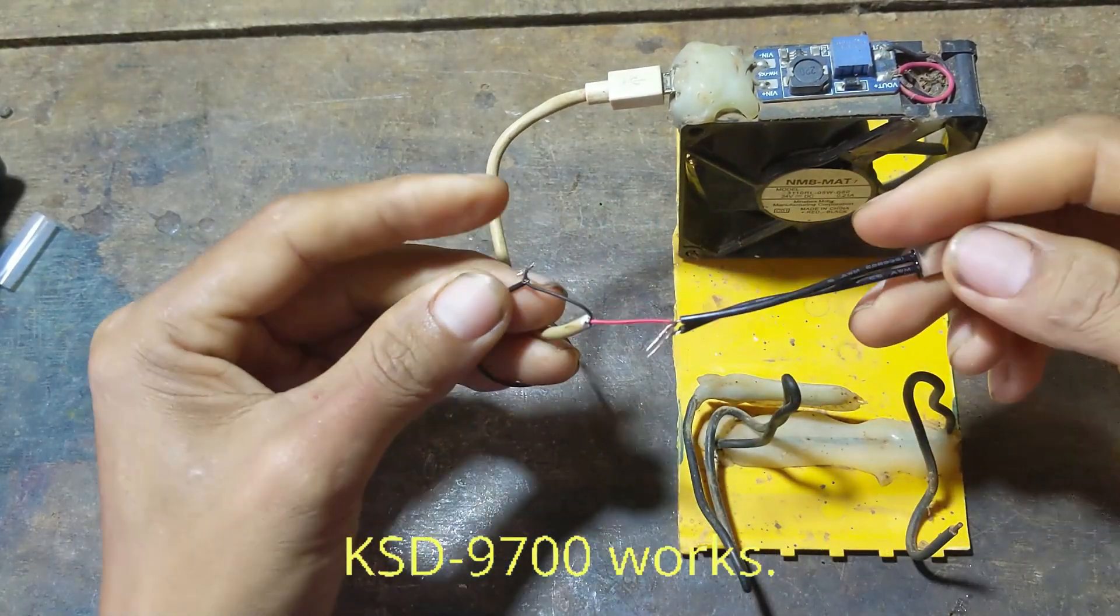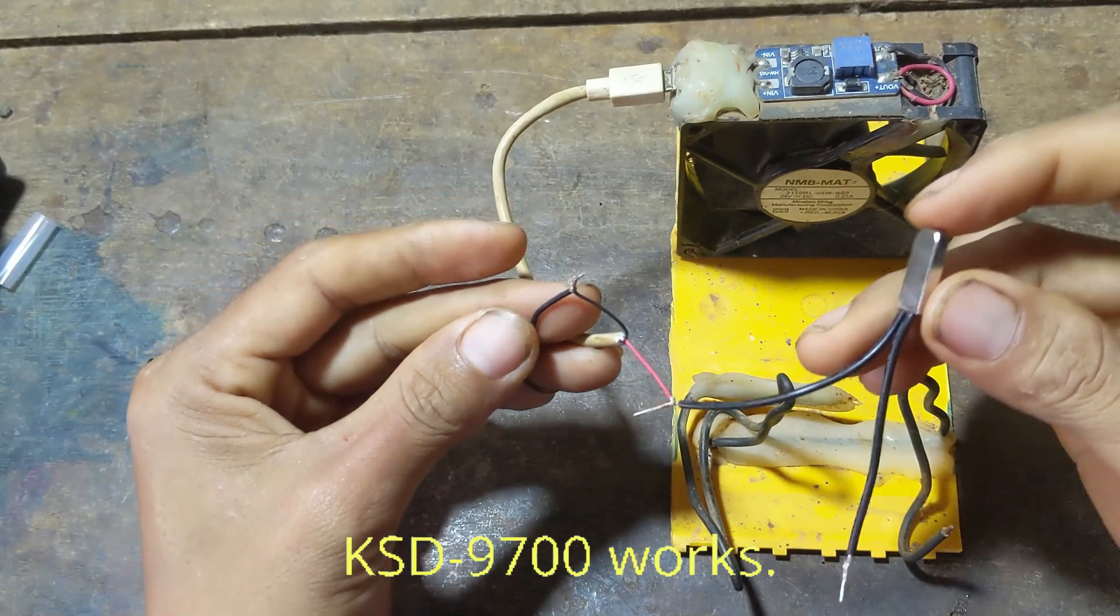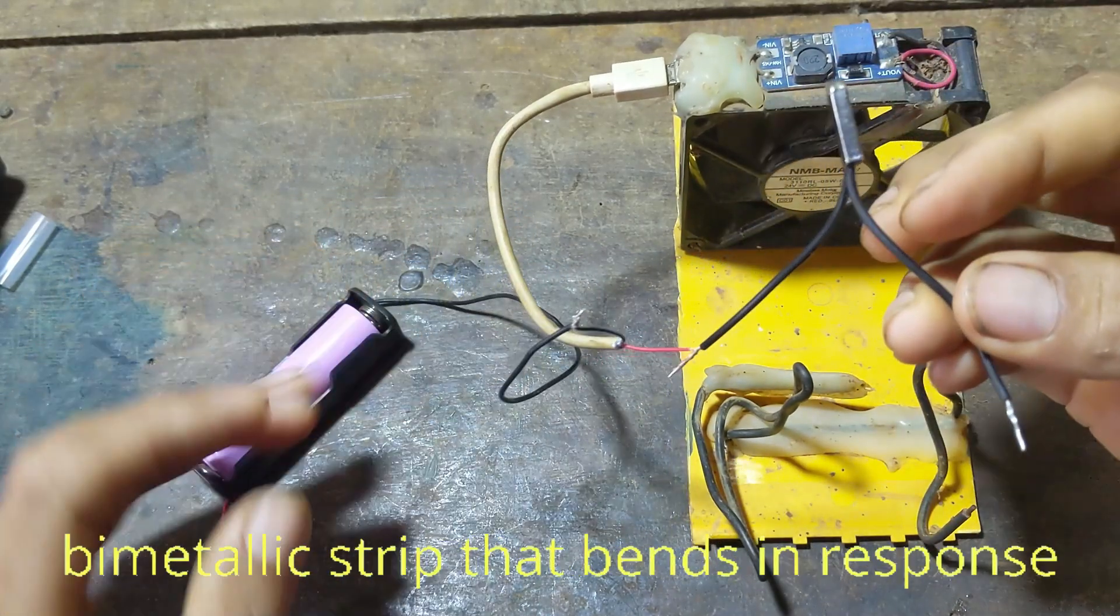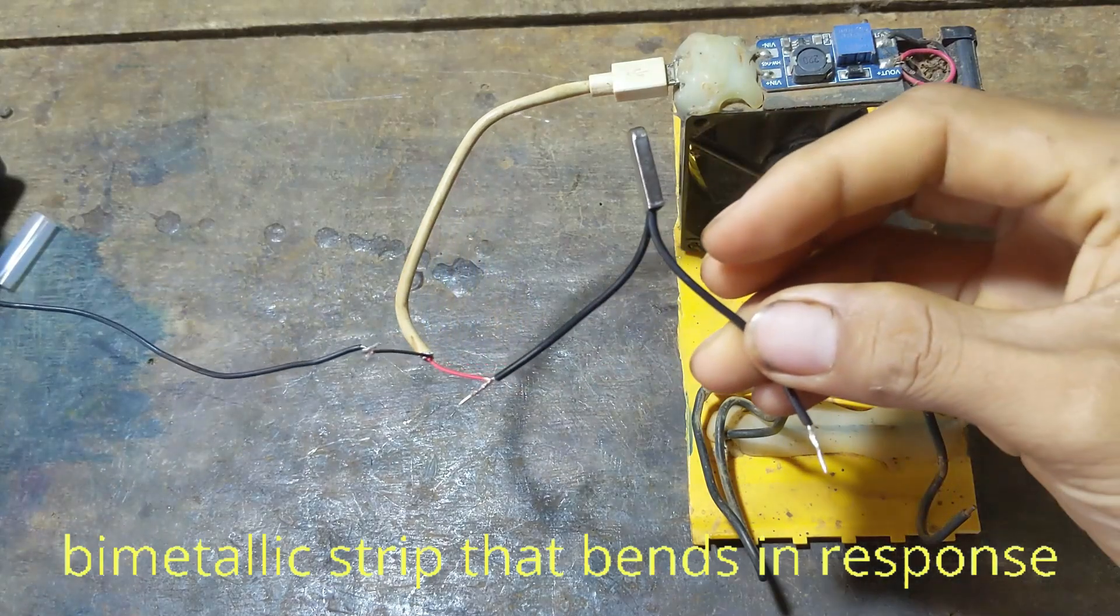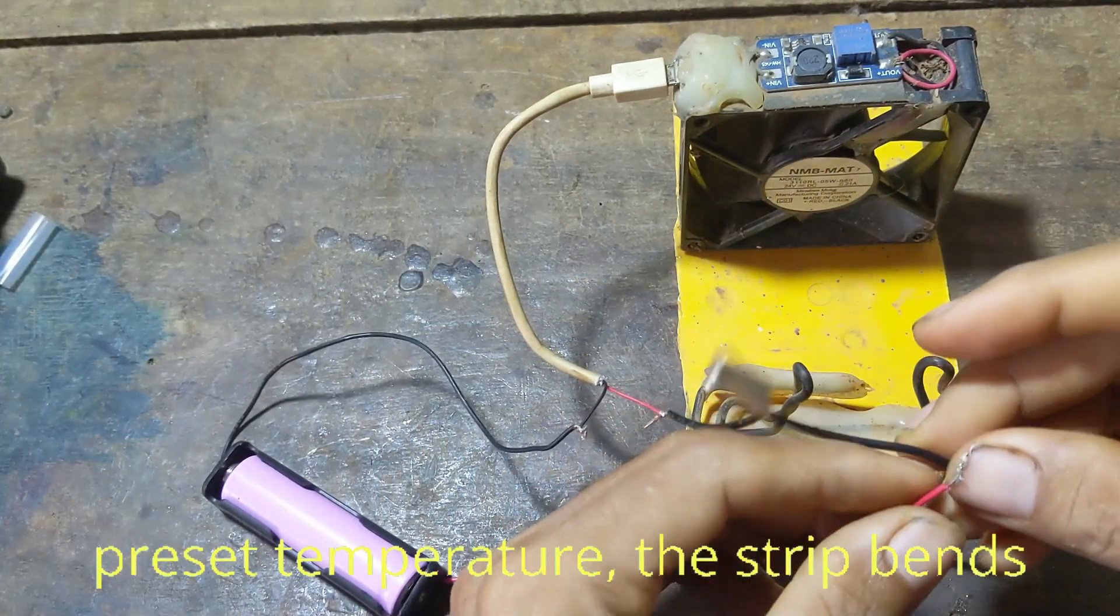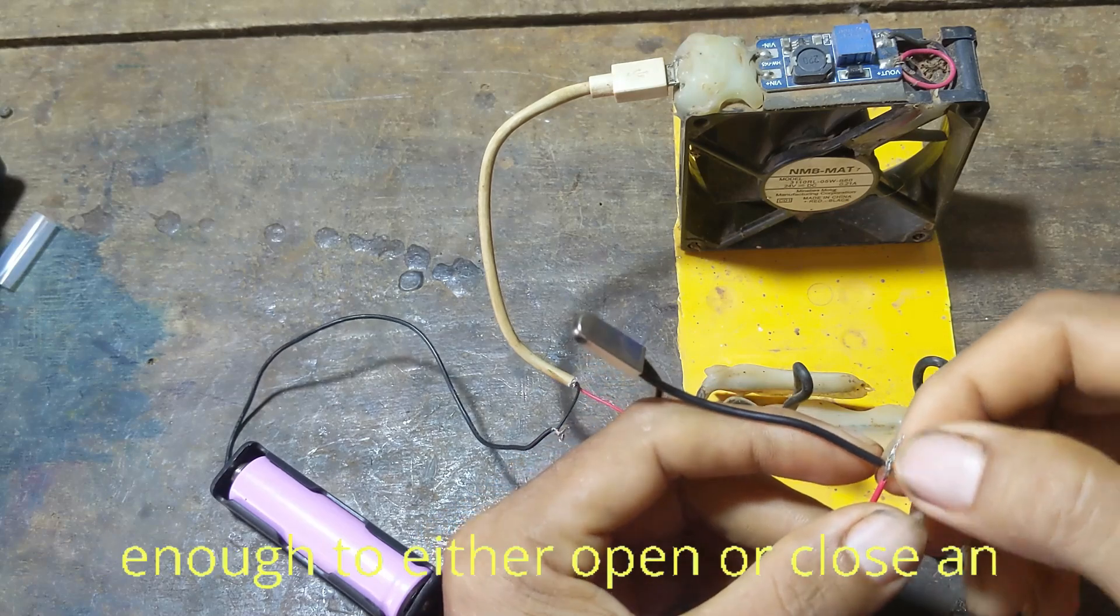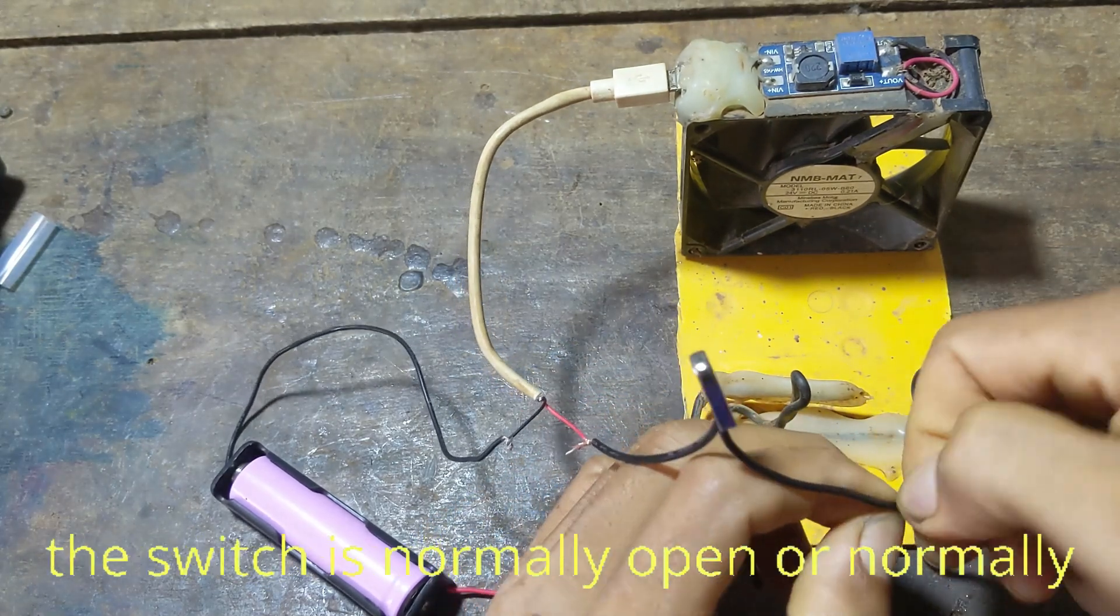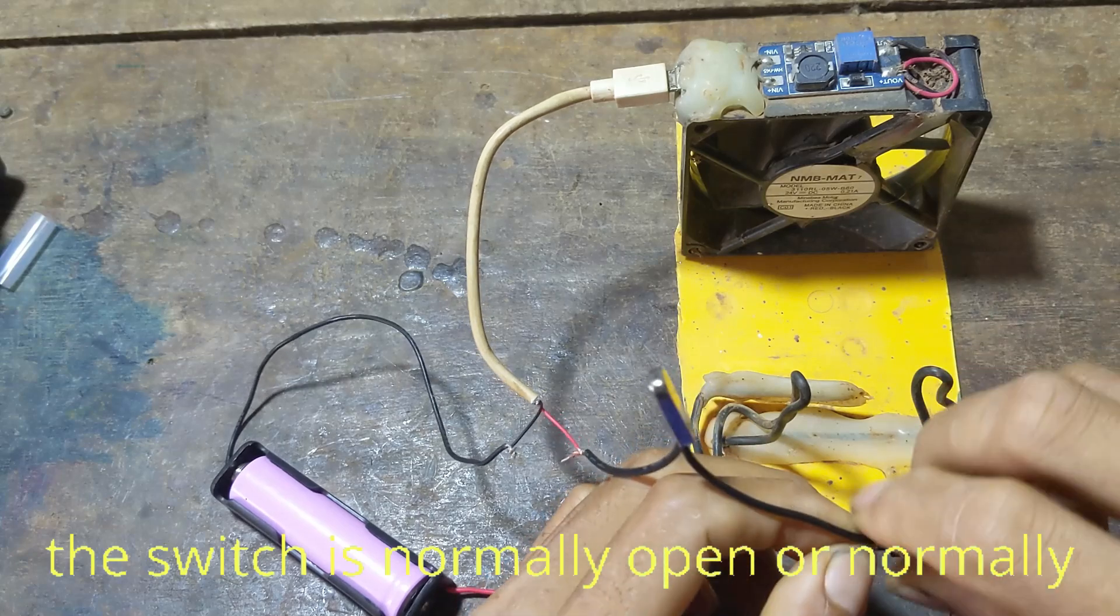How the KSD 9700 works? The KSD 9700 contains a bimetallic strip that bends in response to temperature changes. At a certain preset temperature, the strip bends enough to either open or close an electrical circuit, depending on whether the switch is normally open or normally closed.